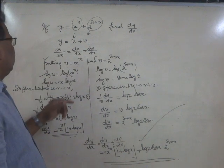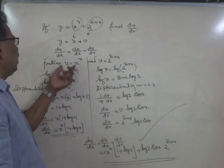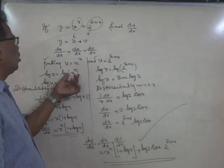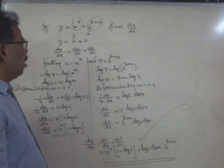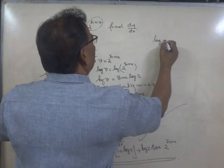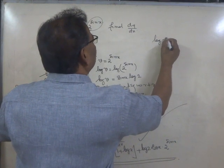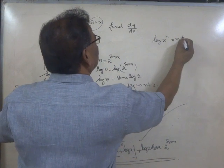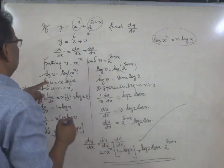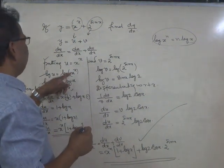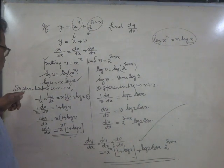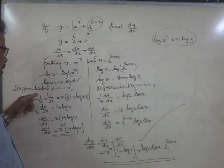Putting u equal to x raise to x, we can take logarithms on both sides. Log u is equal to log of x raise to x. Logarithm of x raise to x is x times log x. Then differentiate — differentiating with respect to x.